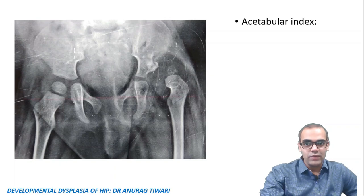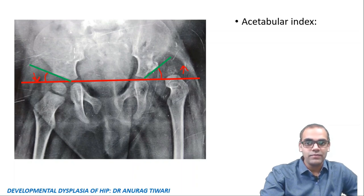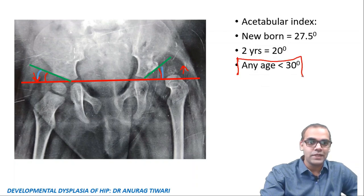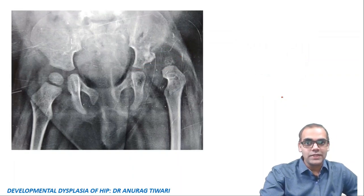The acetabular index is measured by drawing Hilgenreiner's line and another line along the slope of the acetabulum; the angle between them is the acetabular index. On the affected side this angle is increased, meaning the acetabulum is more vertical. Normal value: less than 30 degrees at any age. More than 30 degrees is abnormal and suggestive of DDH, indicating a dysplastic acetabulum.